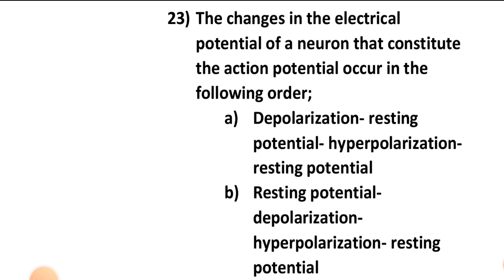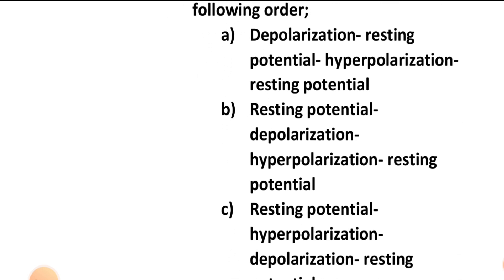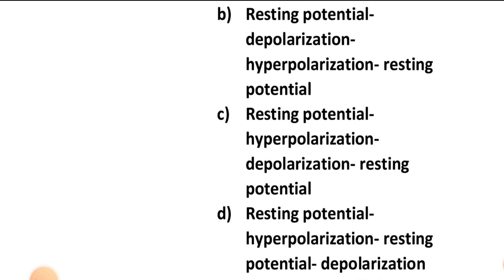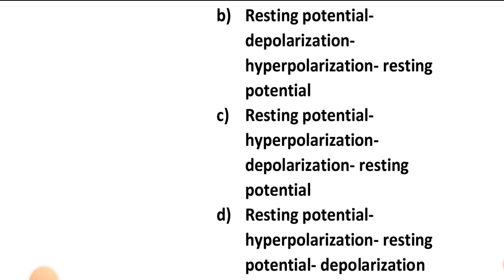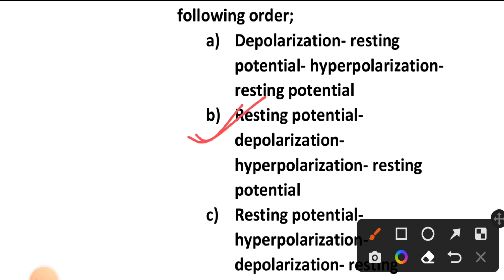Question number twenty-three: The changes in the electrical potential of a neuron that constitute the action potential occur in which order? The order is: first resting potential, then depolarization, then hyperpolarization, then resting potential again. Options B, C, and D all have resting potential followed by depolarization, so option B is the correct answer.